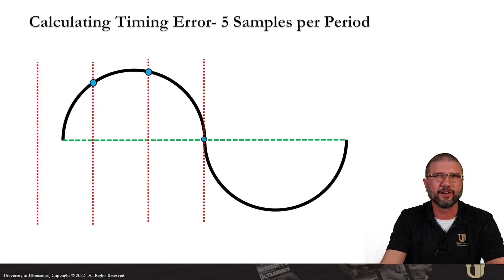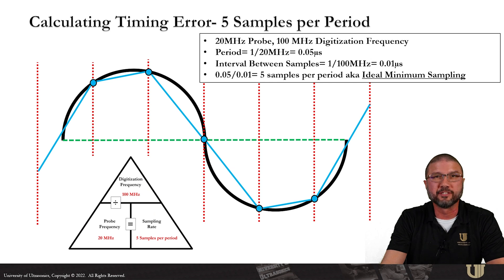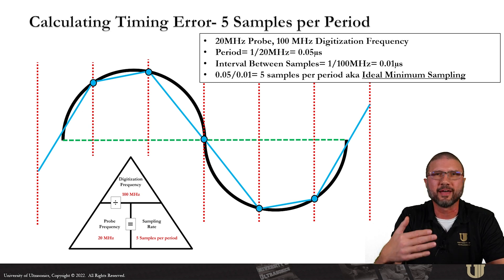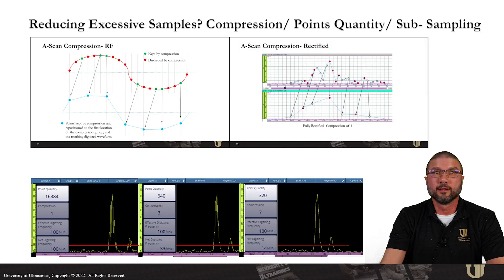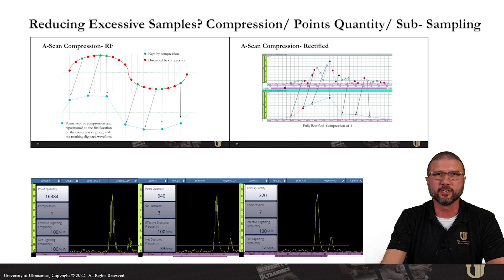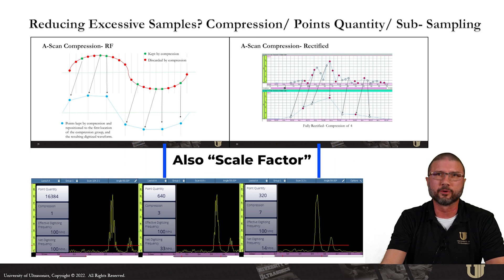Why would a manufacturer set 100 megahertz or even 125 megahertz as a default or max digitization frequency? Simply to make sure we can achieve ideal sample rates with any of the probe frequencies compatible with the instrument — the higher the probe frequency, the higher the digitization rate needs to be. This leads us to our last scenario: a 20 megahertz probe with a 100 megahertz digitization frequency, giving us five samples per period and achieving ideal minimum sampling. Some instruments allow you to directly adjust the digitization frequency; others let you adjust what we call a net digitizing frequency via compression — also known as points quantity or sub-sampling — which I'll cover in a later video.